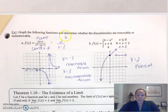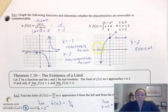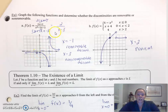Graph the following functions and determine whether the discontinuities are removable or non-removable. Just make sure you reduce your function and graph the resulting function. Don't forget to put the open circle at negative one. You have a vertical asymptote at three. So you can see you have a removable discontinuity at negative one, and you have a non-removable at three because of the asymptote.